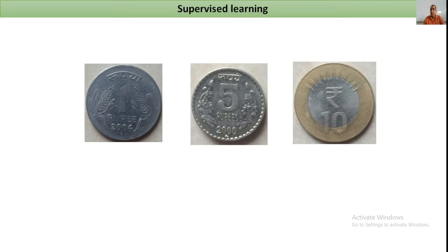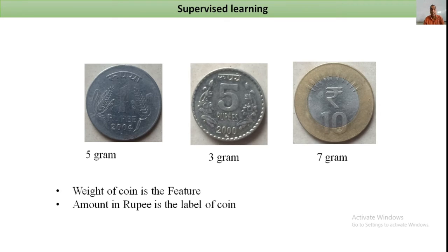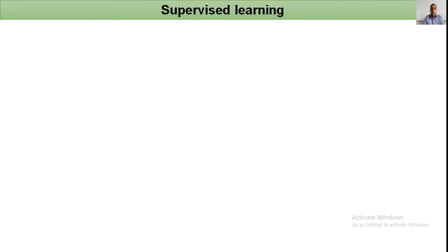What is supervised learning? If your friend gives you coins — one rupee, five rupees, and ten rupees — and you know the weight of the coins: one rupee coin weighs five grams, five rupee coin weighs three grams, and ten rupee coin weighs seven grams. The weight of the coin is the feature and the amount in rupees is the label. The machine learns this: if a coin weighs five grams, it is a one rupee coin. After learning, if you give a new coin, the machine identifies its weight and tells you whether it is a one, five, or ten rupee coin.